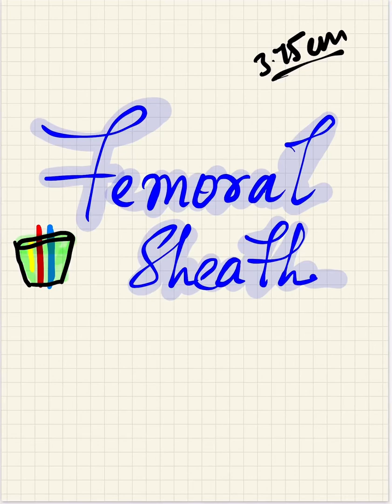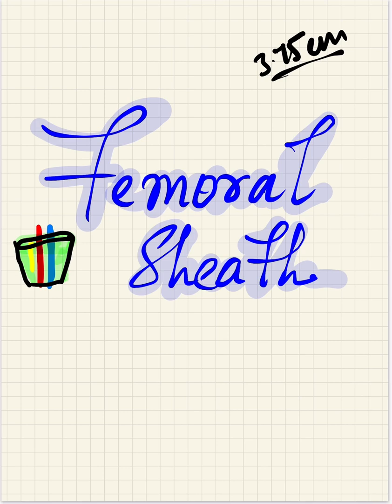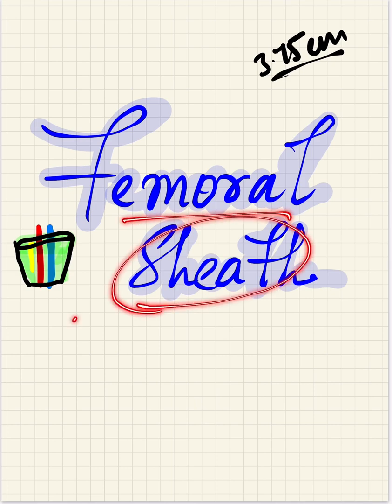Today we'll be talking about the femoral sheath - what it actually is. The fascia lining the abdomen is prolonged into the thigh and encloses the upper 3.75 centimeters of the femoral vessels, forming the femoral sheath. The fascia covering the muscles of the abdominal wall extends into the thigh, covering the upper 3.75 centimeters of the femoral vessels.